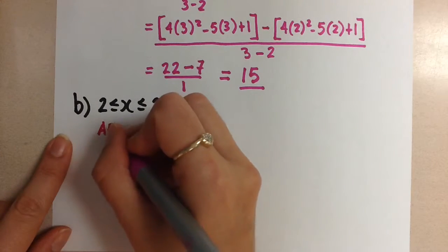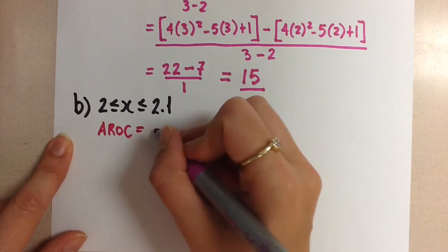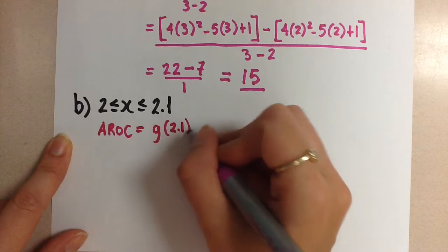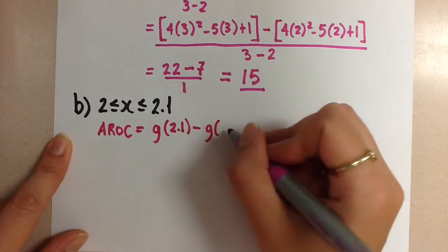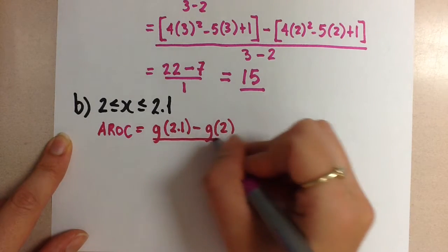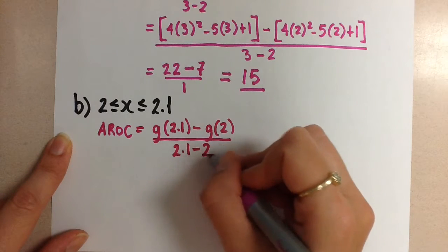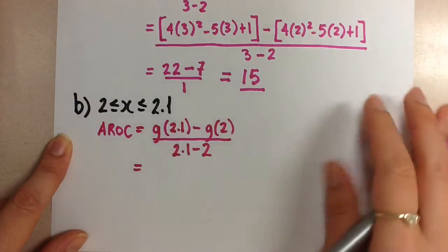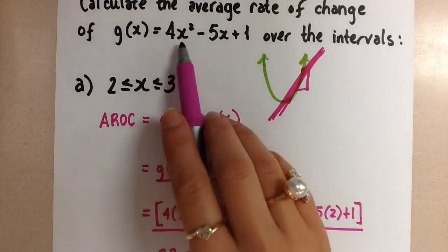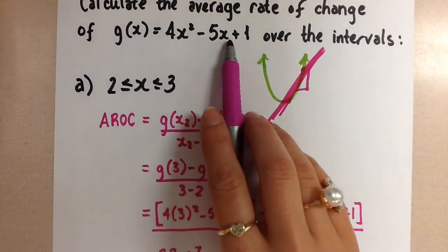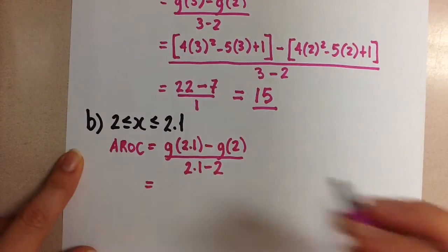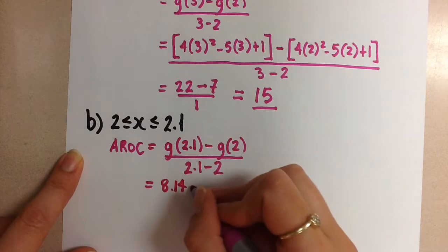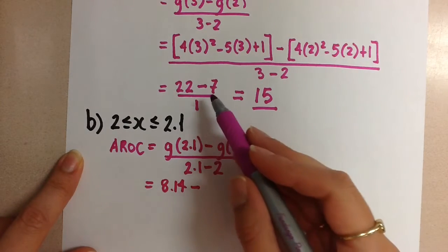Average rate of change is equal to g(2.1) minus g(2) over 2.1 minus 2. So if you sub the 2.1 into the original function, we're going to get a value of 8.14 minus the g(2), which was the same as we had in the previous question. It was 7.